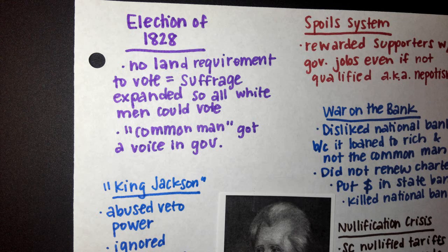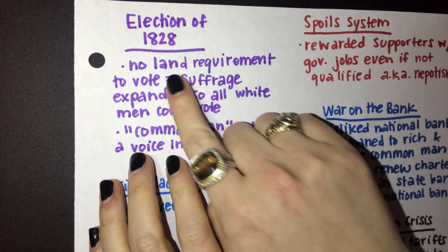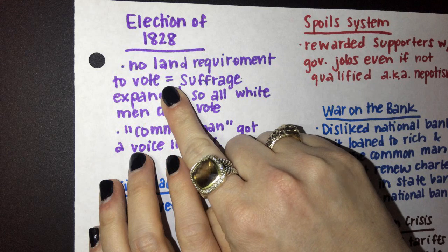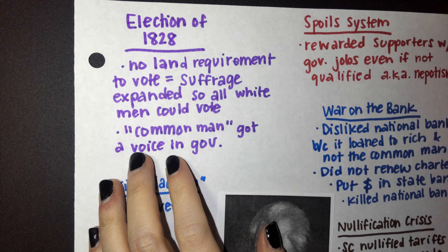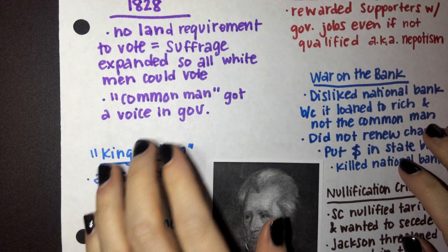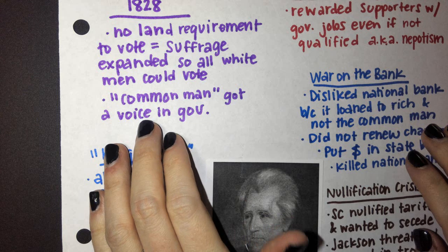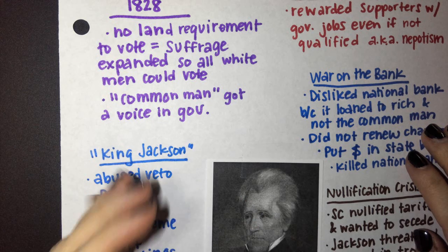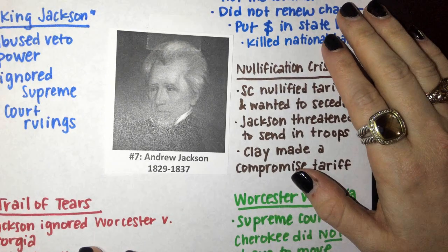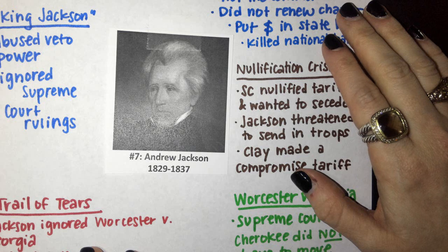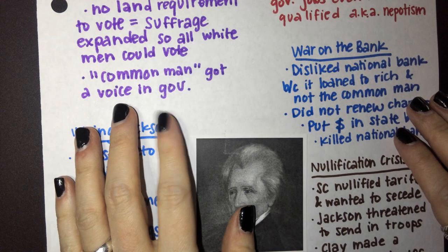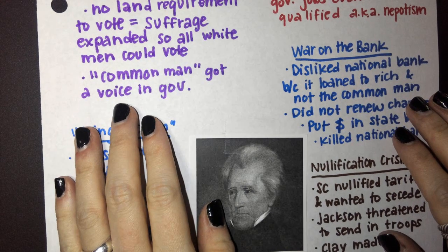He comes back in 1828 and faces off again against John Quincy Adams. He had something on his side: in 1828, there was no longer a land requirement to vote. Suffrage was expanded so that all white men could vote. That meant the common man — regular guys, Southerners and Westerners, farmers — were finally going to get a voice in government. They felt Andrew Jackson, who did not come from an aristocratic background but from a regular, even poor background, was just like them.